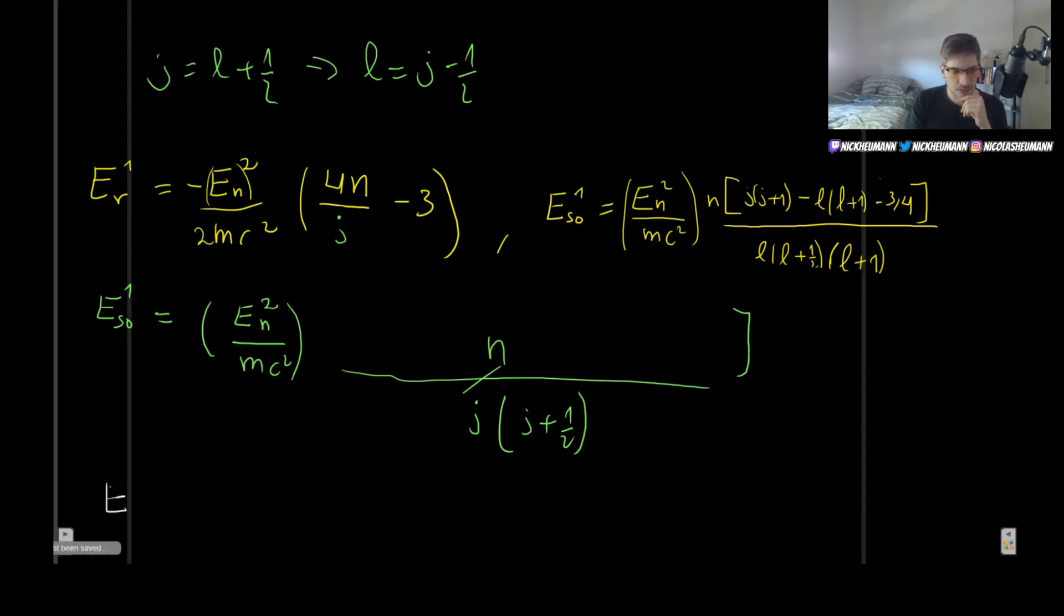So the first-order correction to the fine structure formula, or basically the fine structure formula, right, to the first order. This is going to be—well, if you notice, both of these have EN squared over mc squared. The difference is that this has a 2.